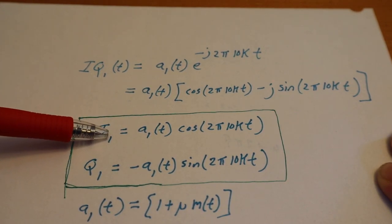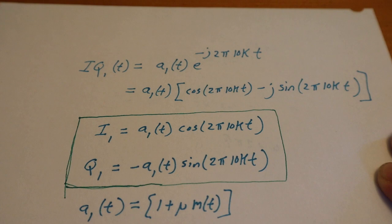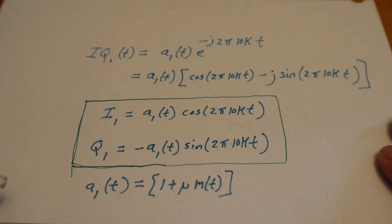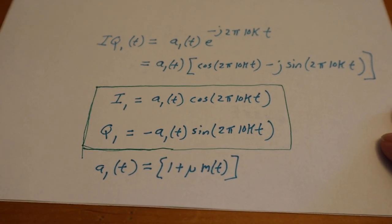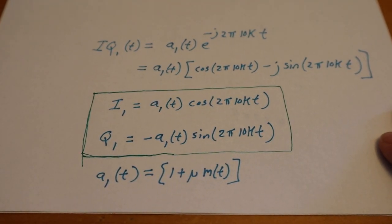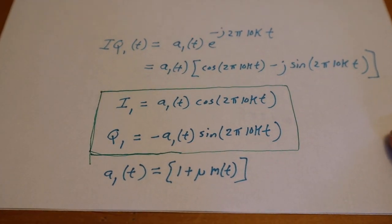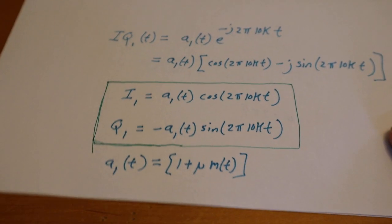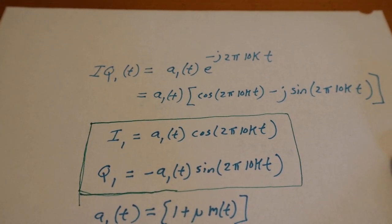If we want to break it out into I and Q data, this is how we would break it out into I and Q: a1 times cosine(2π 10 kHz t), the Q is negative a1 times sine(2π 10 kHz t). a1 again is this 1 + μm(t), m(t) is the message, μ is the carrier percentage, so we'll make it 0.8, why not.